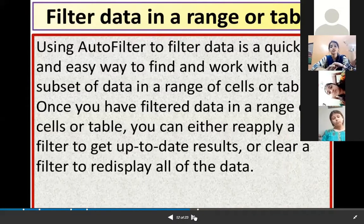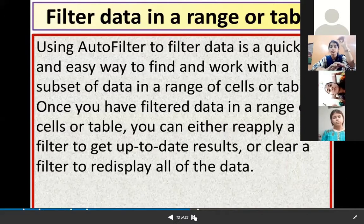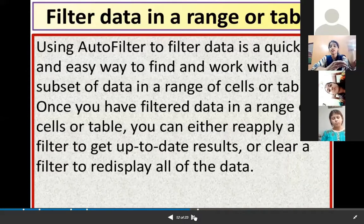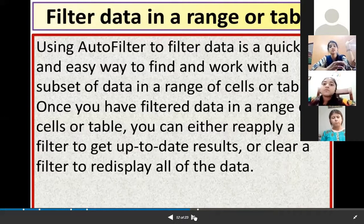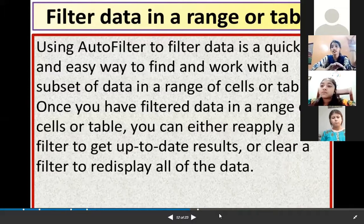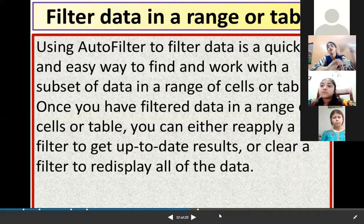Using AutoFilter to filter data is a quick and easy way to find and work with a subset of data in a range of cells or table. Once you have filtered data in a range of cells or table, you can either reapply a filter to get up-to-date results, or clear a filter to re-display all the data.